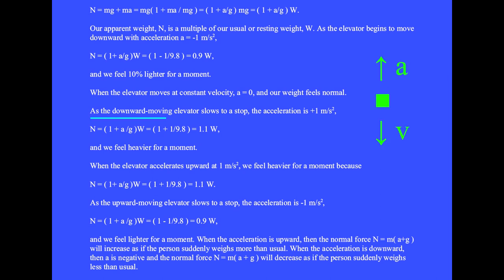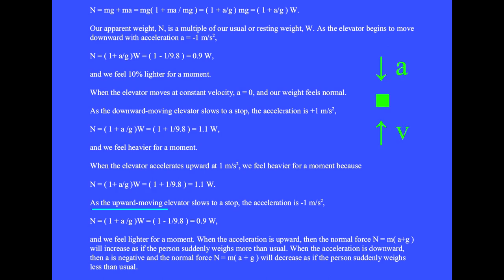As the downward moving elevator slows to a stop, the acceleration is plus 1 meters per second squared. N equals (1 plus 1 over 9.8) equals 1.1W and we feel heavier for a moment. As the upward moving elevator accelerates upward at 1 meter per second squared, we feel heavier because N equals 1.1W. As the upward moving elevator slows to a stop, the acceleration is minus 1 meter per second squared, N equals 0.9W, and we feel lighter for a moment.